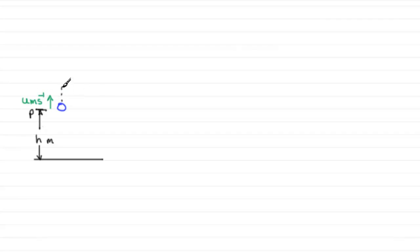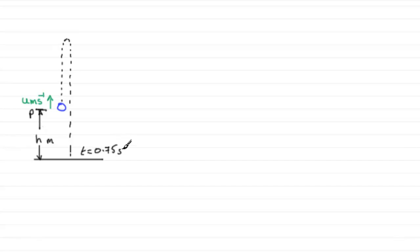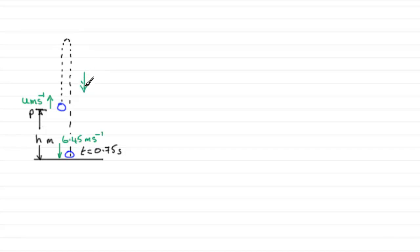The ball is going to go upwards, up into the air, and then instantaneously stop and then start to come back down again. We're told that the ball hits the ground when t equals 0.75 seconds. We're also told that the speed of the ball immediately before it hits the ground is 6.45 meters per second. So just before it hits the ground, it's moving downwards with a speed of 6.45 meters per second. Because it's moving freely under gravity, the acceleration due to gravity acts downwards at 9.8 meters per second squared.